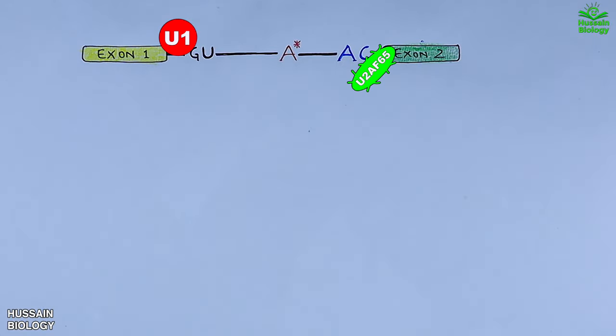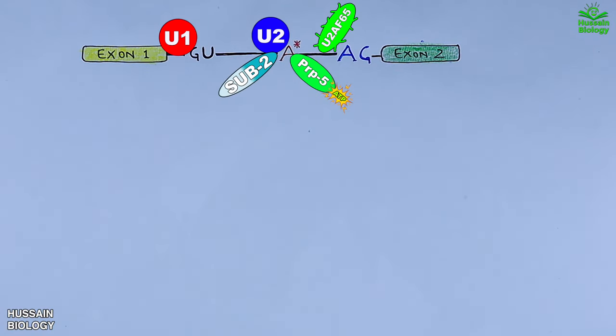Then U2AF65 binds towards the 3 prime end and recruits U2 SNRNP. This U2 binds at the branch site at the adenine nucleotide. Along with that we have the recruitment of PRP5 and sub2 molecules. PRP5 associates with ATP to mediate and energize the splicing process. PRP5 proofreads U2 branch site interaction, whereas sub2 helps in spliceosome assembly. During this event, SF3A also comes in and binds with the pre-mRNA molecule. After all these bindings and interactions, we get conformational change in pre-mRNA.